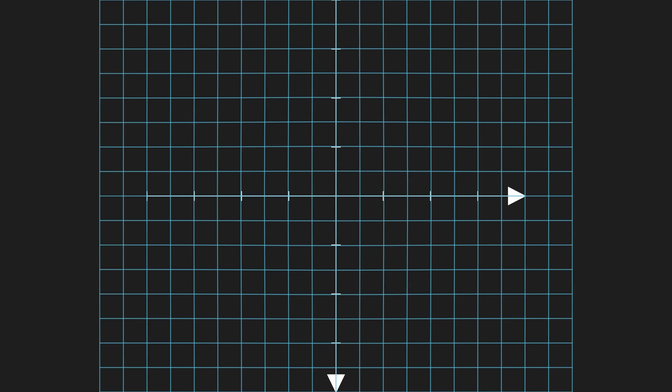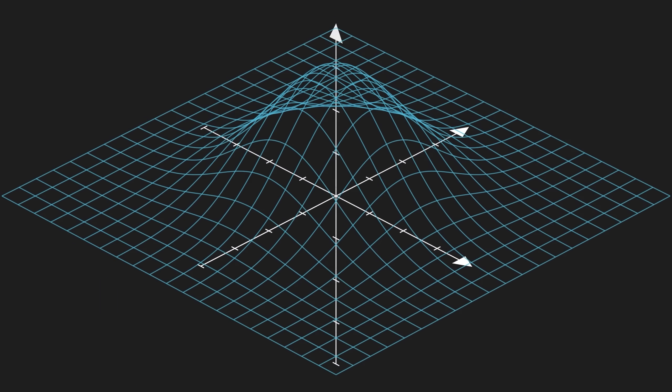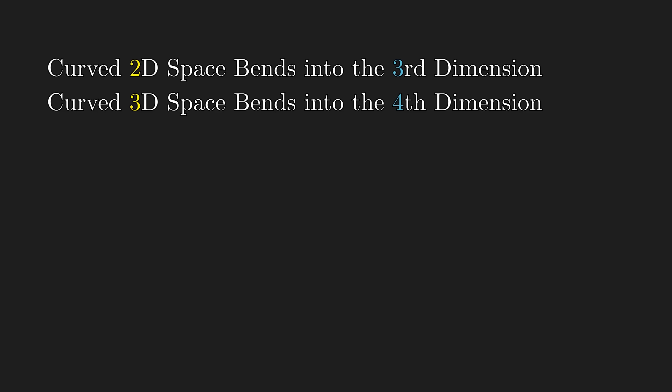You've probably heard somewhere that curved 2D space bends into the third dimension, and curved 3D space into the fourth, but how true is that statement? Maybe it is true, or perhaps only up to a specific dimension n, but stops being true after.